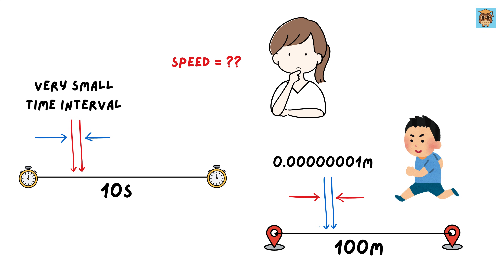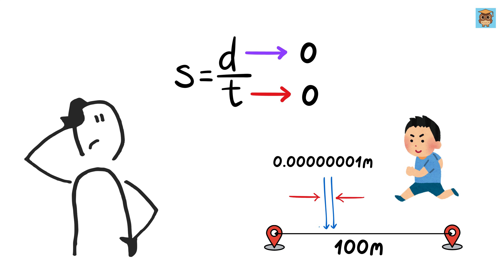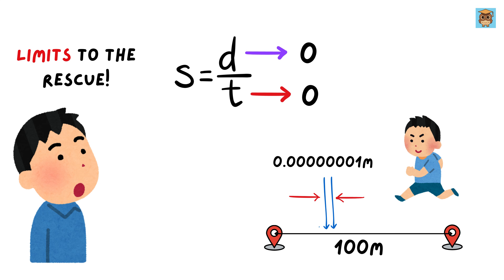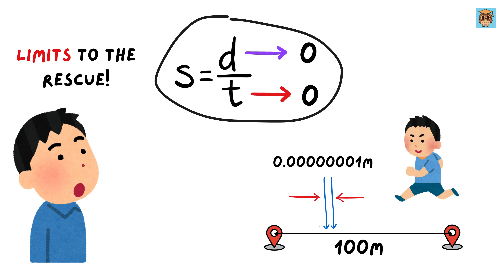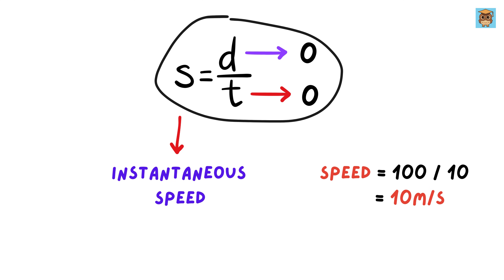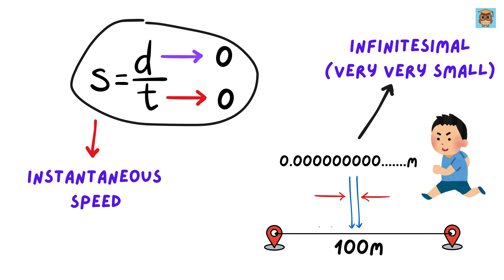This question isn't as straightforward. It's like asking what happens when both the numerator, or distance, and denominator, or time, of a fraction approaches 0. At first glance, it seems confusing — how can we divide 0 by 0 and get a meaningful answer? Yet this is exactly the kind of question limits can help us answer. The result of this process gives us the instantaneous speed of the runner at a specific point in time — how fast they are moving at a single precise moment, like zooming in infinitely close to capture their exact speed at that instant.